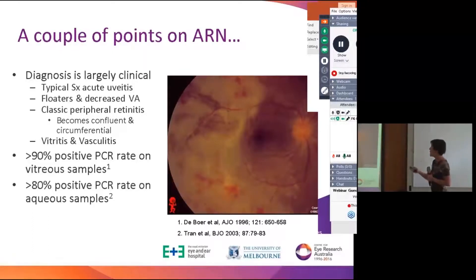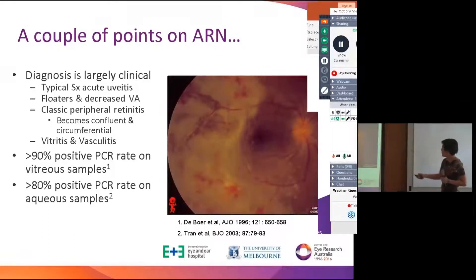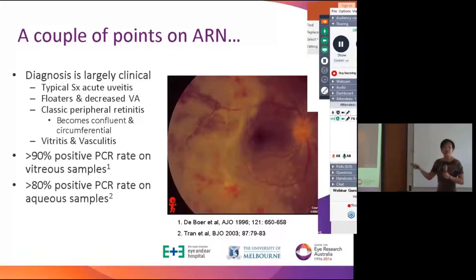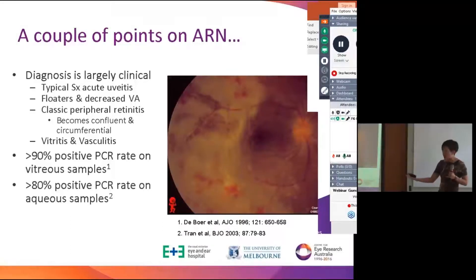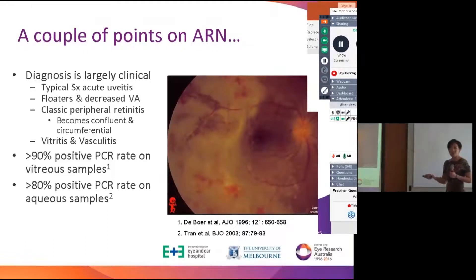Points on acute retinal necrosis: classic wide-out of the retina with feathering of vessels through areas of retinitis. Diagnosis is clinical; confirm with AC tap or vitreous tap. If the diagnosis is unclear, I'll do a vitreous tap. A second case of ARN — a young boy referred with vitritis, vasculitis, and secondary retinal artery occlusion with sheathing of arterioles. The initial ophthalmologist thought it was central retinal artery occlusion, but with an indirect ophthalmoscope they would have picked up fairly typical peripheral lesions — this was toxoplasmosis.